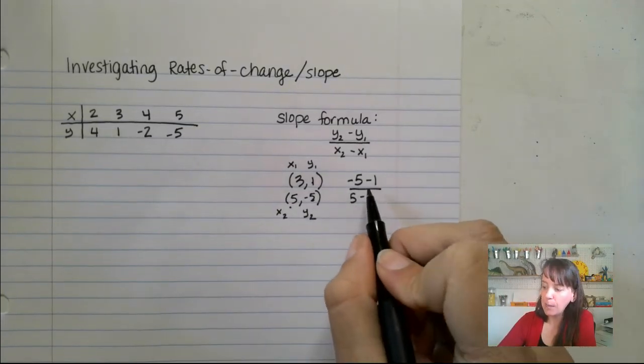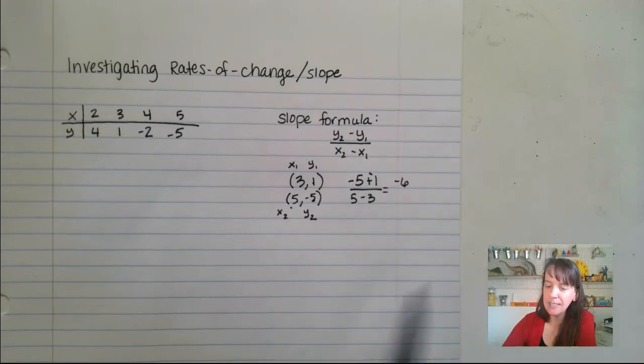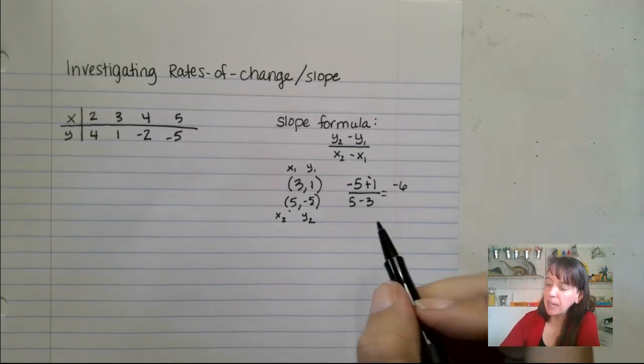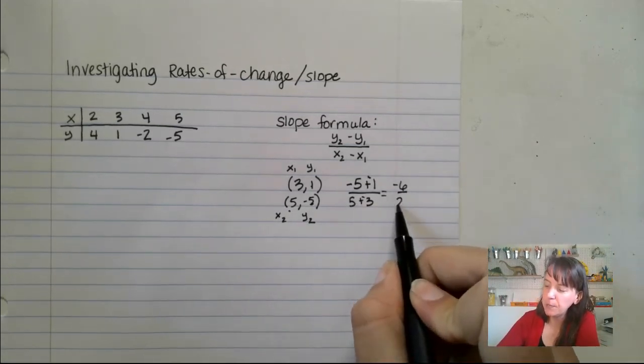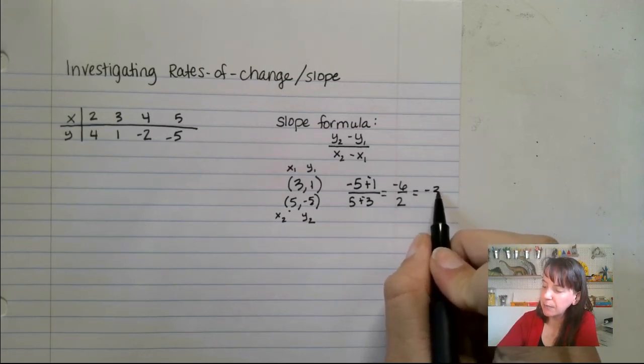And remember, add the opposite. So we're going to add the opposite here and give us -6. Okay, then on the bottom, when we add the opposite, we end up with positive 2. Negative 6 divided by 2 is going to be -3.